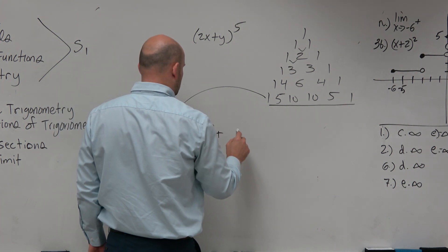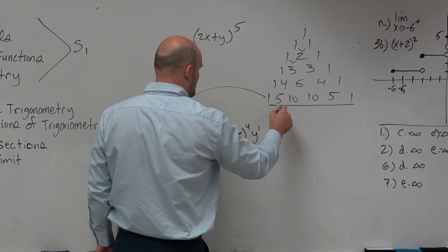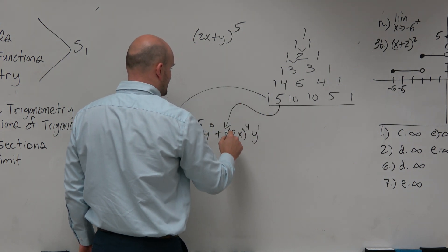One. So then we do the next one. 2x to the fourth. And then this would be y to the first. Bring the five in there.